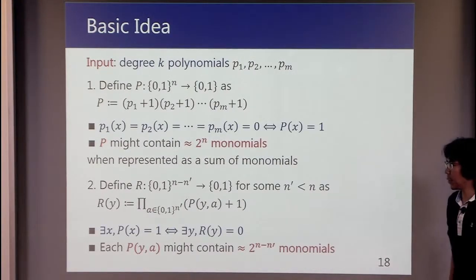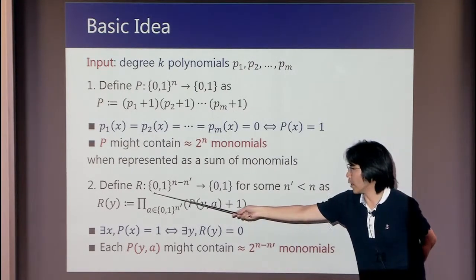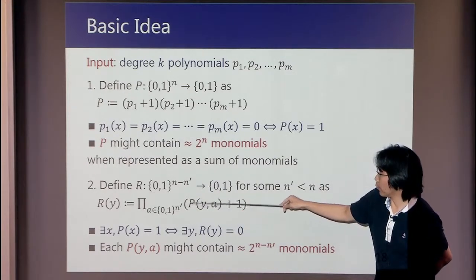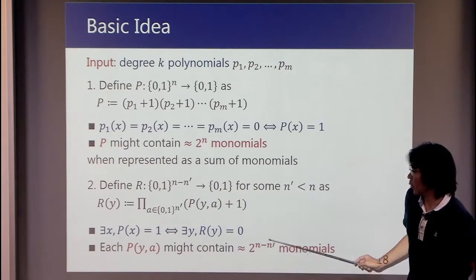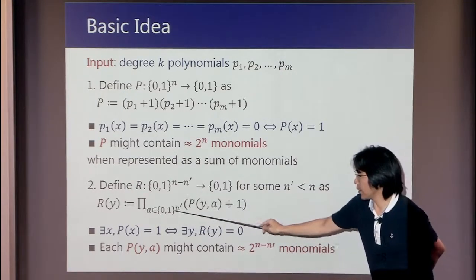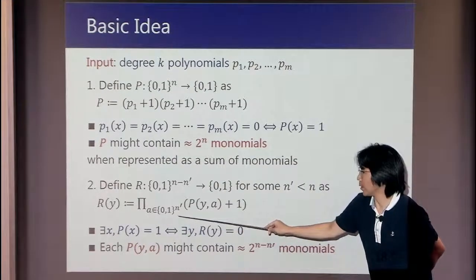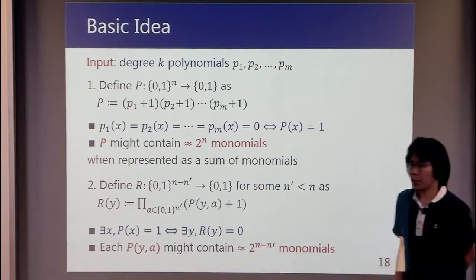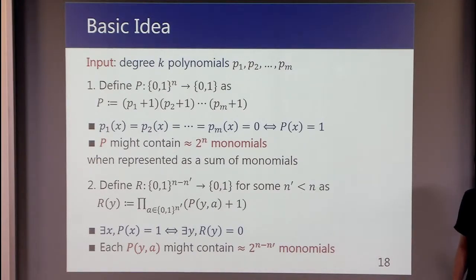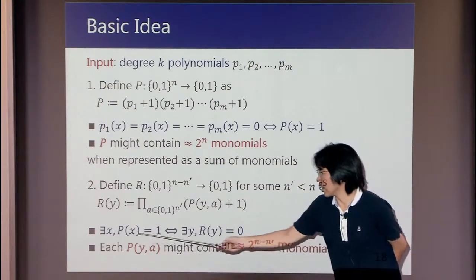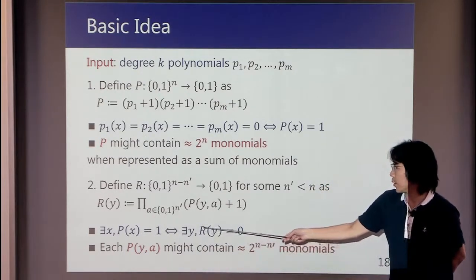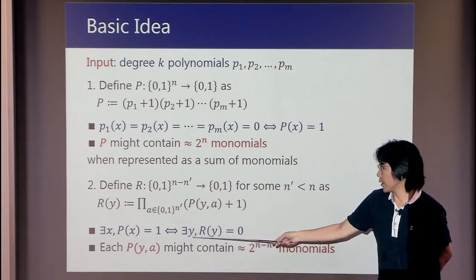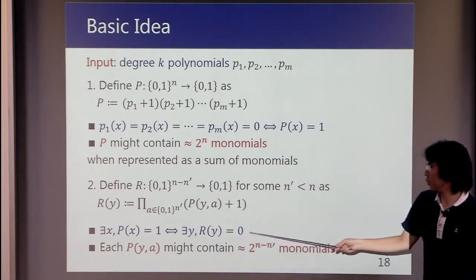Next, we define a function r as a product of P(y,a)+1 over all assignments a in {0,1}^(n') for some appropriately chosen n'. Then you can see that there exists some x such that P(x) is 1 if and only if there exists some y such that r(y) is 0.